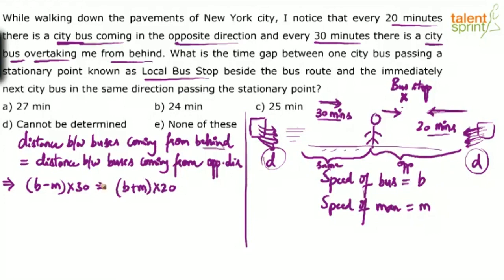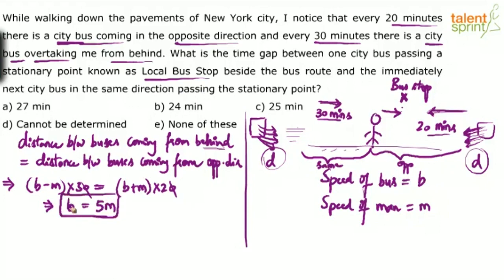From the equation (b − m) × 30 = (b + m) × 20, we expand: 3b − 3m = 2b + 2m. Simplifying: 3b − 2b = 2m + 3m, so b = 5m. This is a very important conclusion — the speed of the bus is 5 times the speed of the man, regardless of whether they are moving in the opposite direction or the same direction.